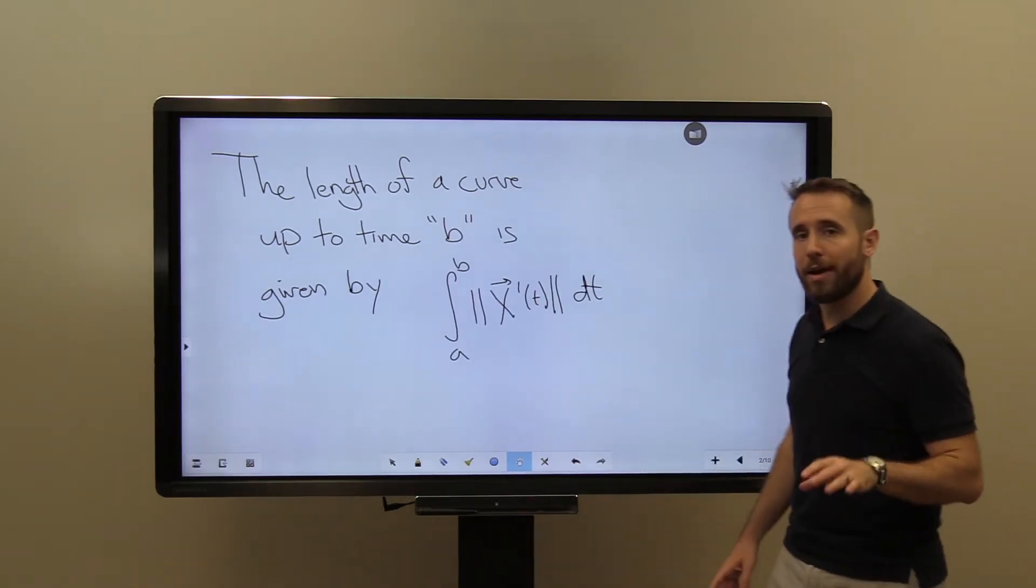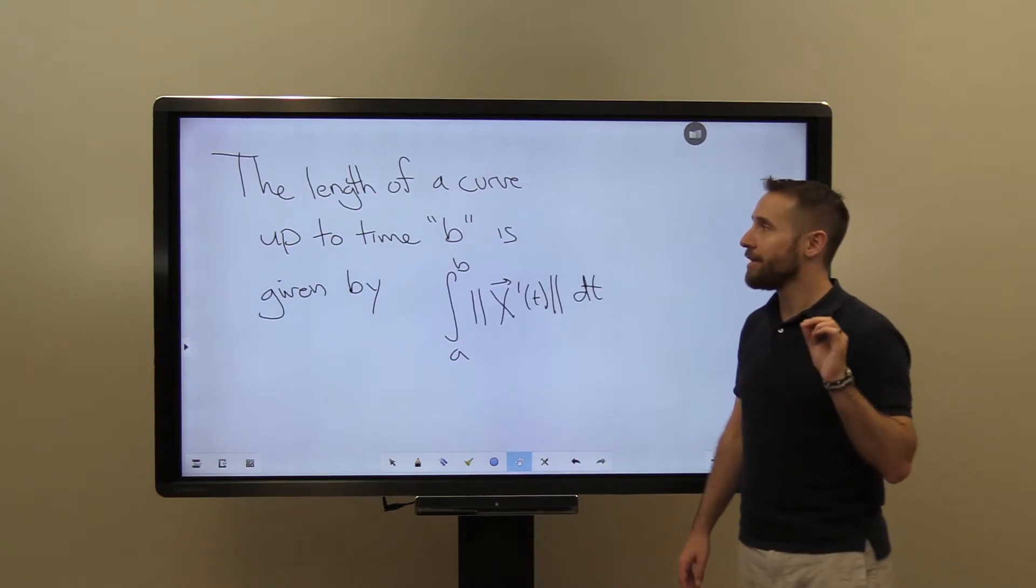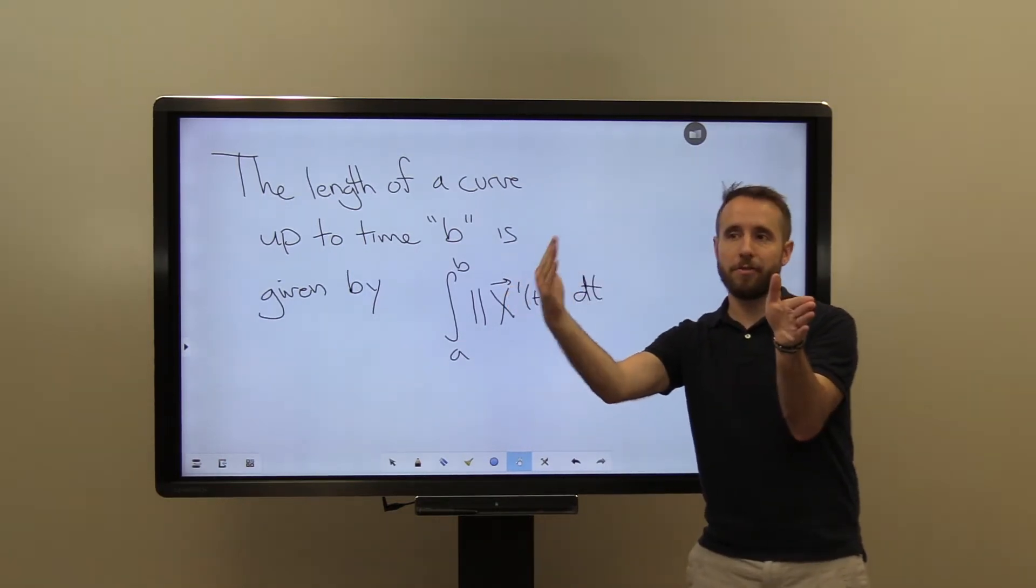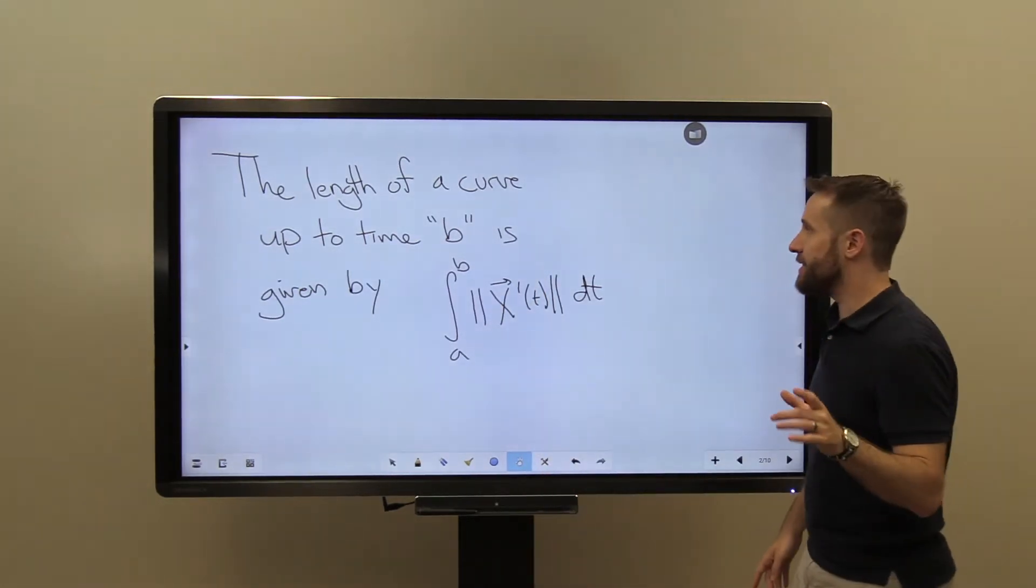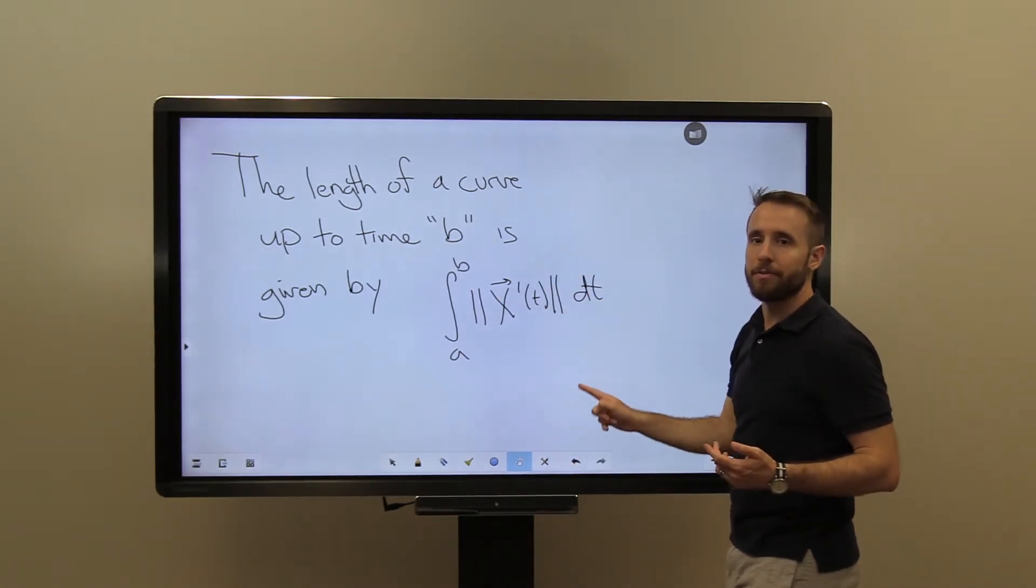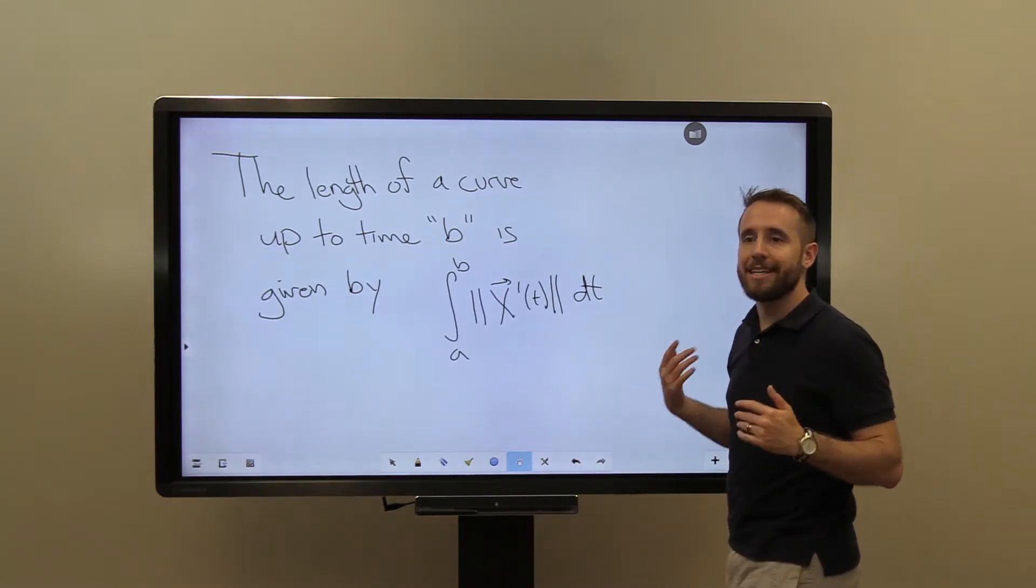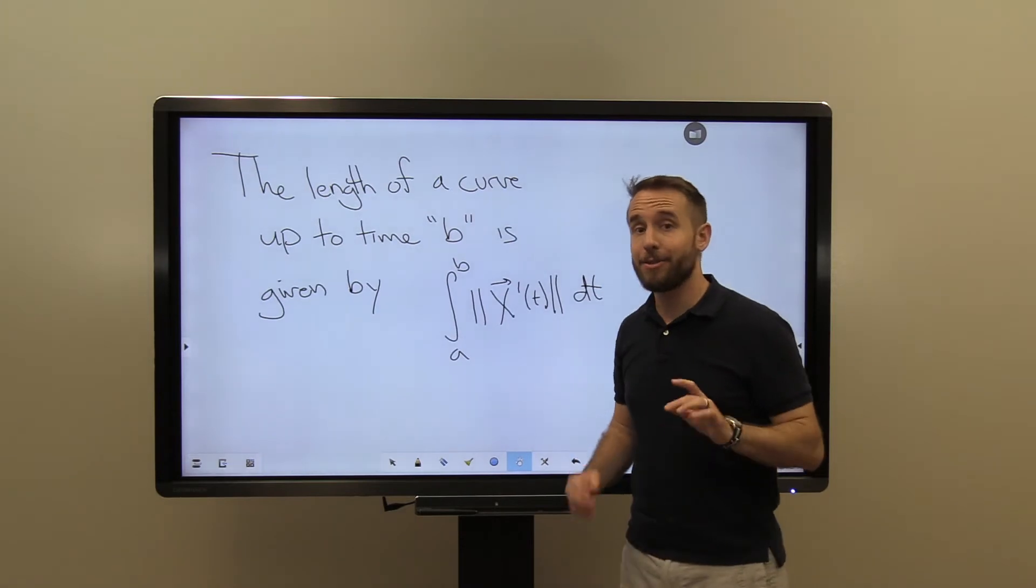Okay, so put another way, the arc length that we just measured, measured the length of our curve over the entire interval a to b. So from time a up to time b. And I'm going to phrase this as the length of a curve up to time b is given by this integral. Now, I'm phrasing it that way because I can actually use this idea to measure the length of a curve up to any given moment in time.